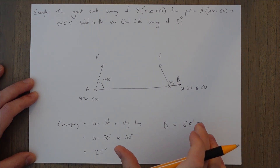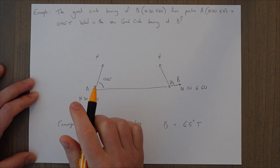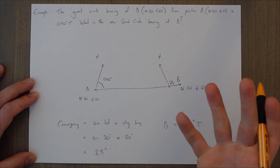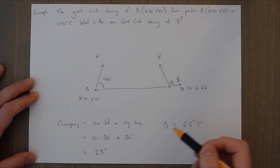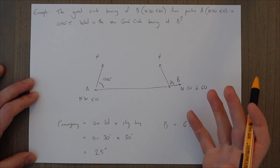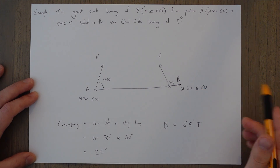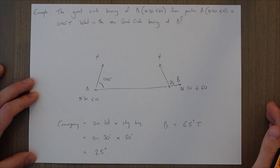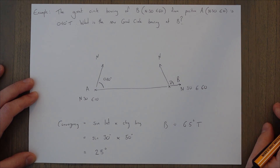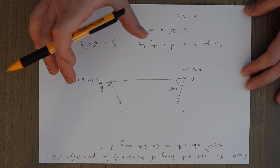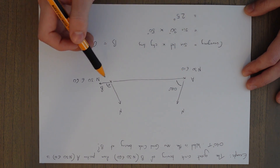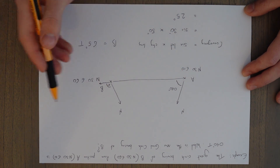If we take an average of our 040 and our 065, we find the average great circle track. In this case, it would be 52.5 degrees for the average great circle track. If the question asks for this, it's very simple — take one, take the other, and divide by two. That average great circle track would be equivalent to the rhumb line between the two points.